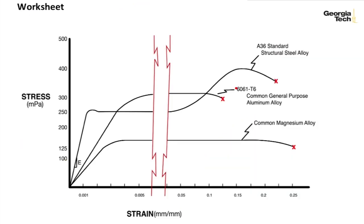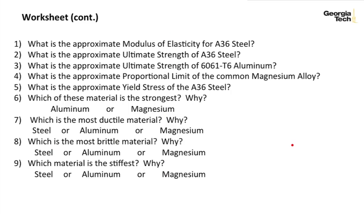Now what I'd like you to do is complete a worksheet to look at typical stress-strain diagrams for different materials and pick off values. Here I have three typical materials: a standard structural steel alloy, a common aluminum alloy, and a magnesium alloy. For those different materials and those typical stress-strain curves,